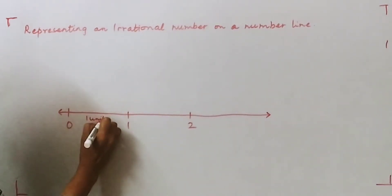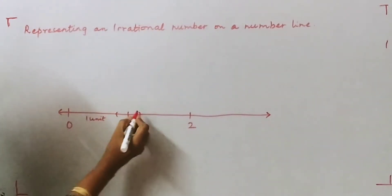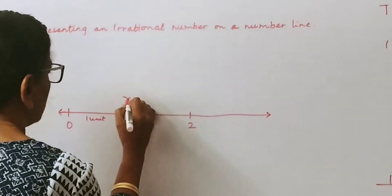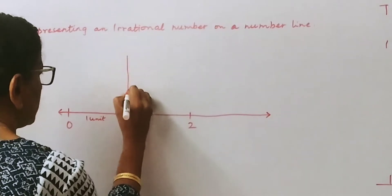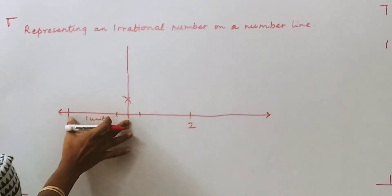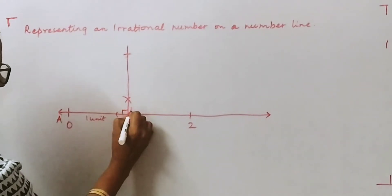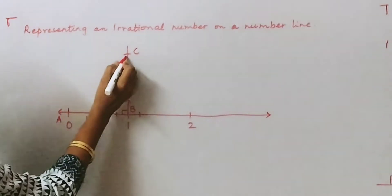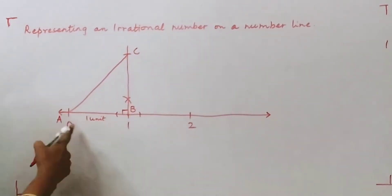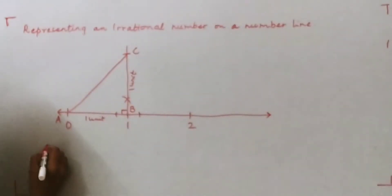This is your one unit length. We put the point of the compass here and make two arcs on either side, then take these two arcs and make one intersecting arc from each side with the same radius. We draw a line joining these intersection points, marking the same distance as 0 to 1. We call this point A, this is 90 degrees, this is point B, and this is point C. Joining AC gives you the hypotenuse, and ABC becomes the right triangle where AB is one unit and BC is also one unit.